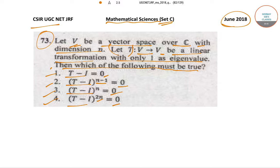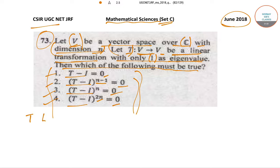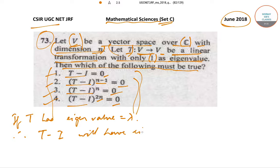We have been given that V is a vector space over C with dimension n, and T from V to V is a linear transformation which has 1 as the only eigenvalue. Now, we know that if T has eigenvalue equal to λ, then the matrix T minus I will have eigenvalue λ minus 1.